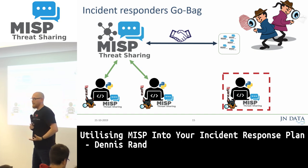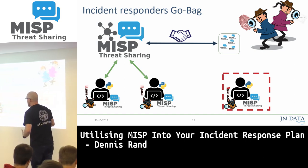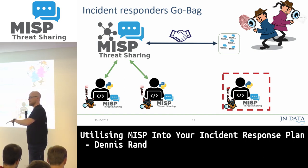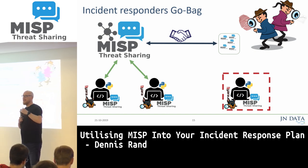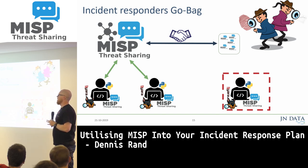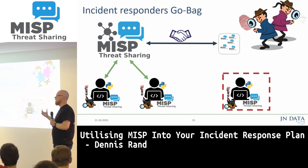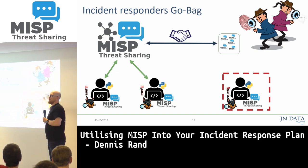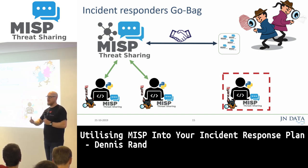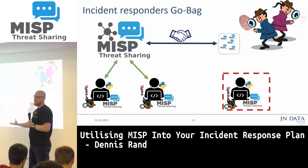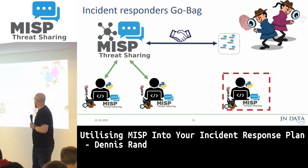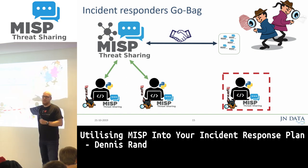A good idea is to also have a local MISP instance. Each incident responder has a local instance of MISP running on their laptop that they synchronize with the centralized system. This ensures you can always bring this data with you — even if you're in an air-gapped location without internet access, you still have the data and can use it in your incident response plan or when doing forensics. Afterwards, when you're done with the incident and get back, it gets synced up and can be used by everyone.